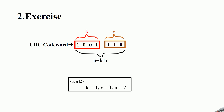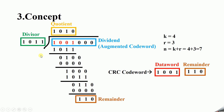But in practice, how can we get the CRC code word? There is a simple way to make it: take the augmented data word and perform division with the divisor. Then we will get the remainder. Just put the data word and the remainder together, and we will get the CRC code word.